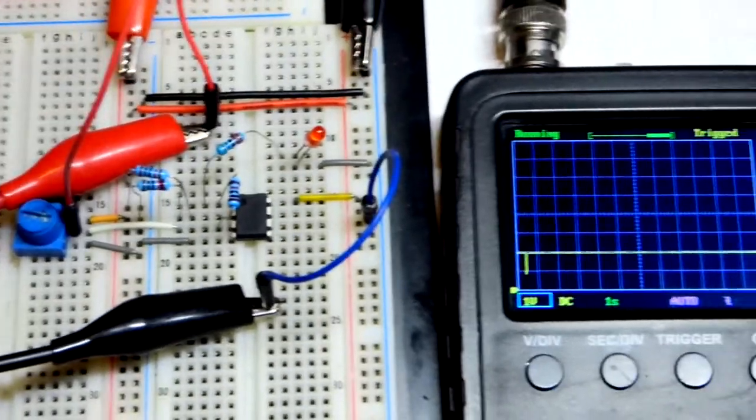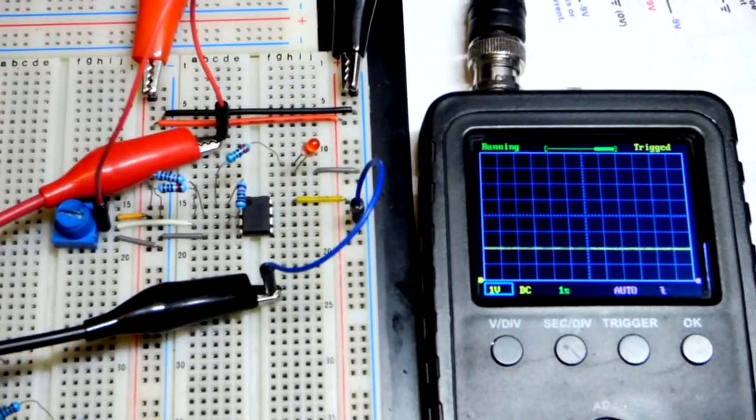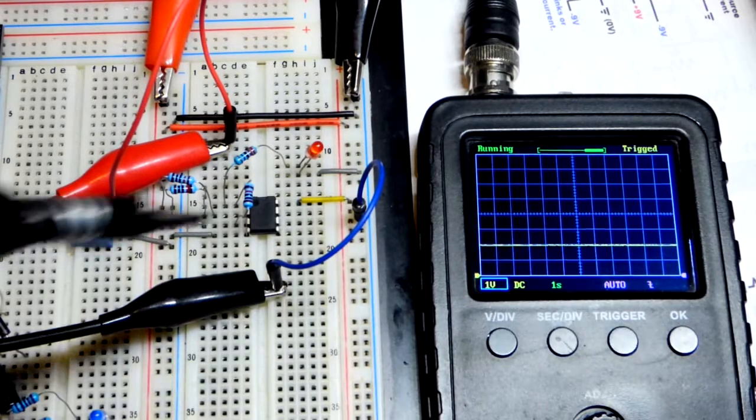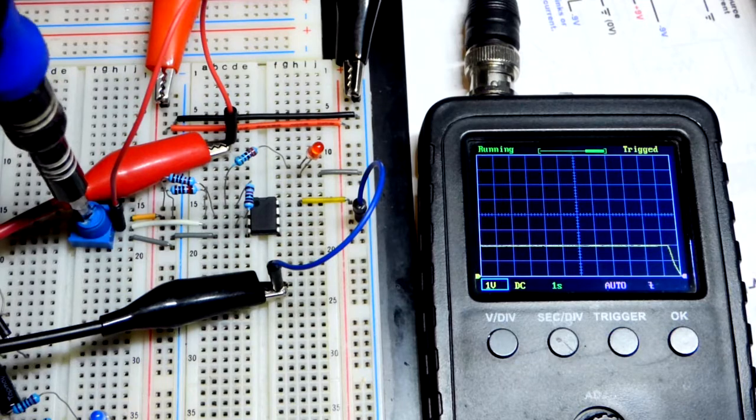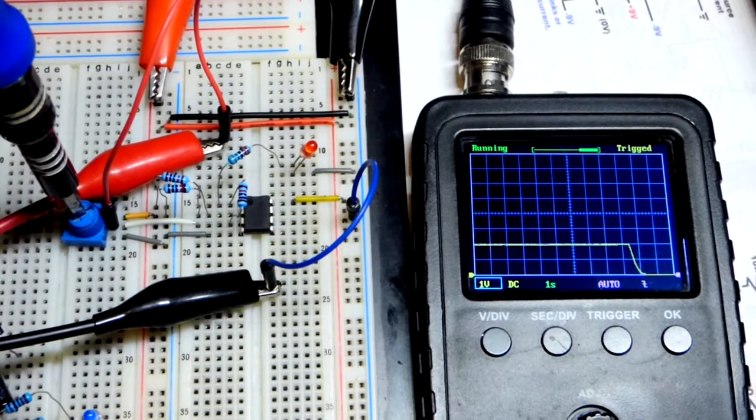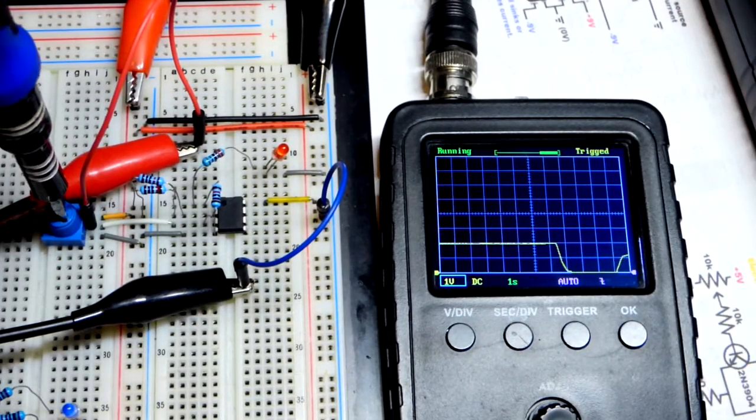So the voltage at the red alligator clip, our trim pot, is in relationship to ground, zero volts. And so you can see I can easily lower the voltage right there by turning the trim pot down and going back up.